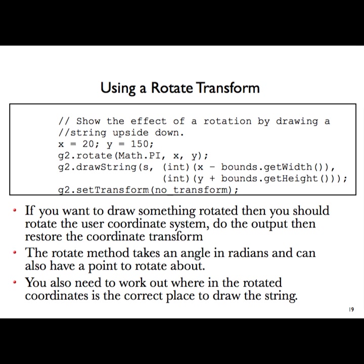Here we rotate something by pi radians — a full turn upside down — then draw that string again, and then transform it back. We saved something called noTransform earlier, so we can overwrite to undo it. That one sets the transform to a particular rotation; that one undoes it.